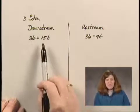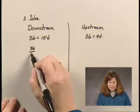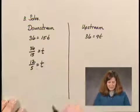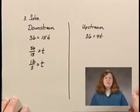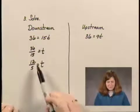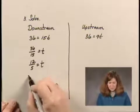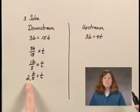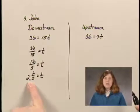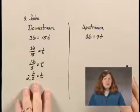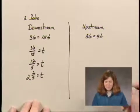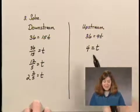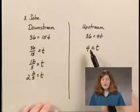For downstream, I divide both sides by 15 and I get 36 over 15 equals T. Simplifying, I have 12 fifths equals T, which as a mixed numeral is 2 and 2 fifths hours. So we have a possible solution of a downstream time of 2 and 2 fifths hours. It should take longer to go upstream, so hopefully the time will be a bigger number. Dividing both sides by 9, we have 4 equals T. That is larger than 2 and 2 fifths, so we have a possible solution of 4 hours upstream and 2 and 2 fifths hours downstream.